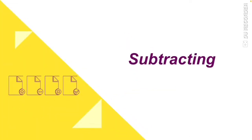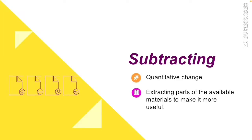The next technique is subtracting. Subtracting is a quantitative change — it refers to extracting parts of available materials to make them more useful. For example, some parts of an activity may be taken out to make it more clear.